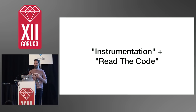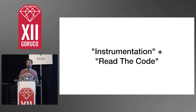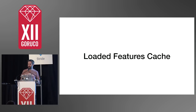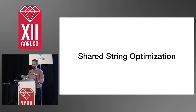We combine the two techniques of malloc stack logging instrumentation plus reading the code. We instrument the process to find where we're using up memory and then go read that function to figure out how we might reduce it. Now that we know how to find where our program is using memory, let's talk about the improvements that I made. The first one I want to talk about is a loaded features cache.